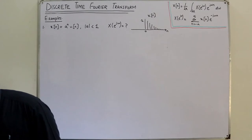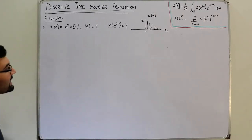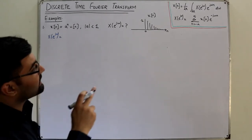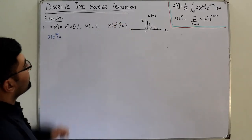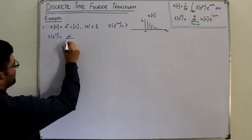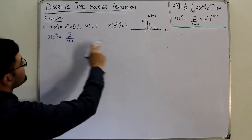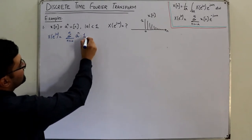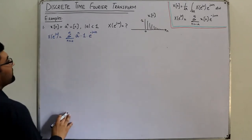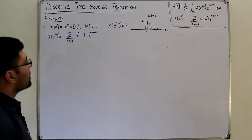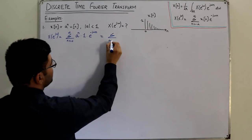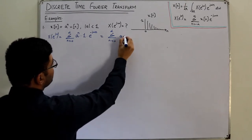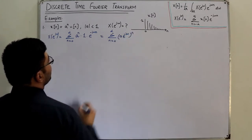Since the signal is converging, we can find it using the formula. X(e^jω) equals the summation from n = 0 to positive infinity (since u(n) limits the range) of a^n · e^(−jωn). Since we have the power n in common, I can write this as the summation from n = 0 to infinity of (a · e^(−jω))^n.